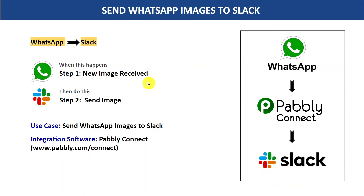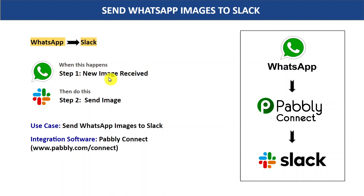Hey everyone, in this video we are going to learn how you can send WhatsApp images to a Slack channel automatically so that your team stays updated. WhatsApp and Slack are two different communication platforms with no direct connection, so we are going to integrate both using an integration software called Pably Connect. This process requires no coding knowledge and any non-technical person can do this easily.